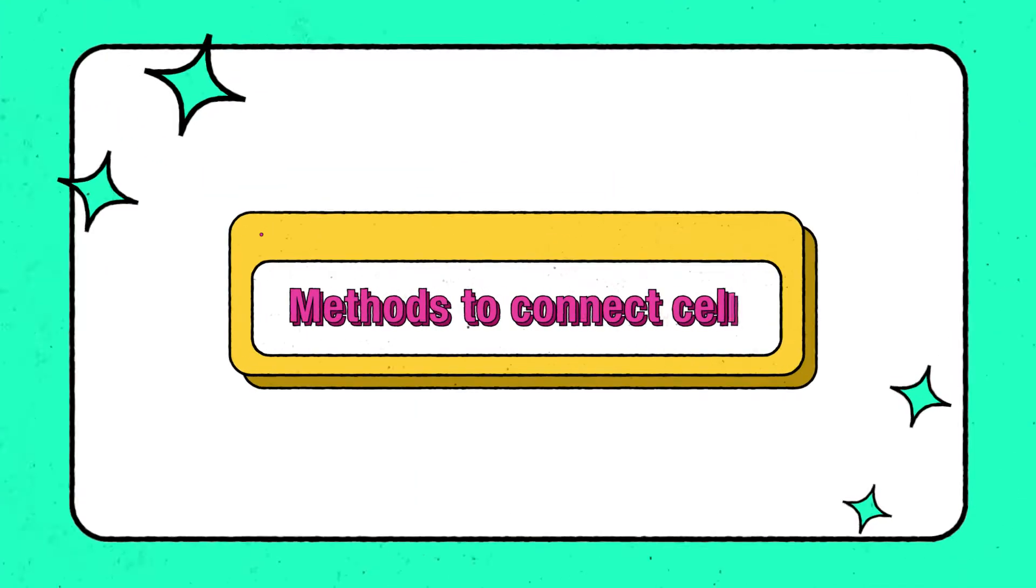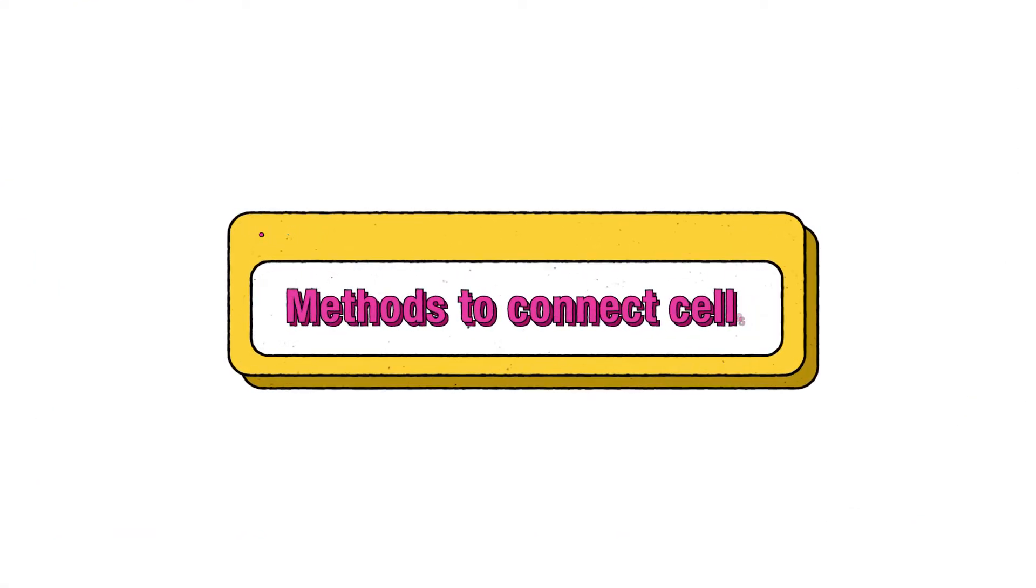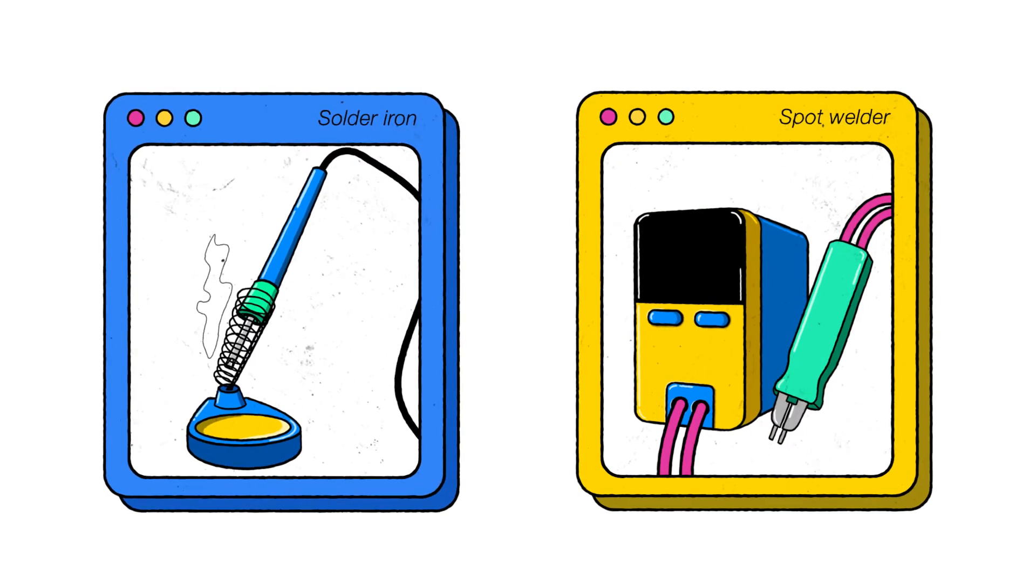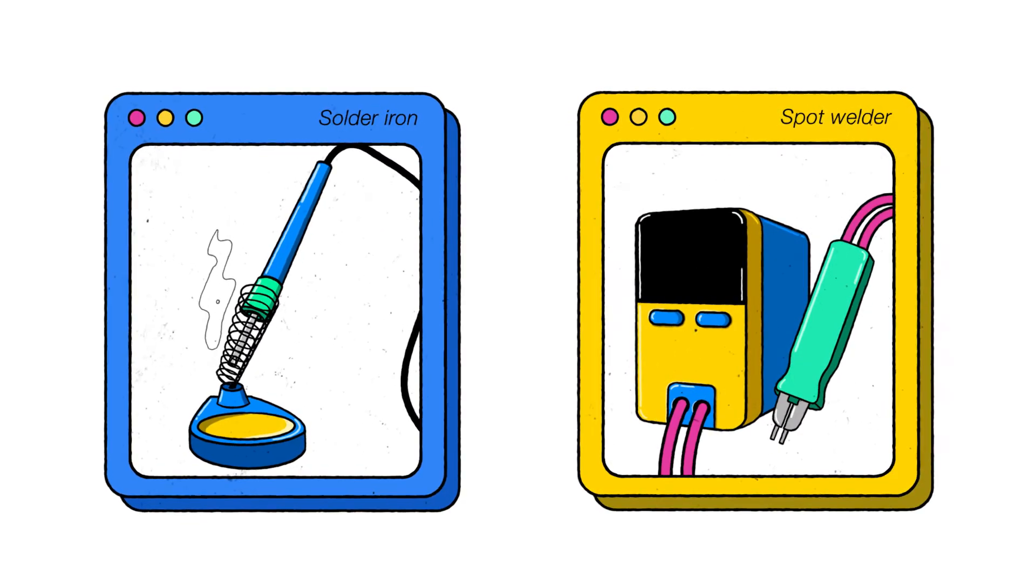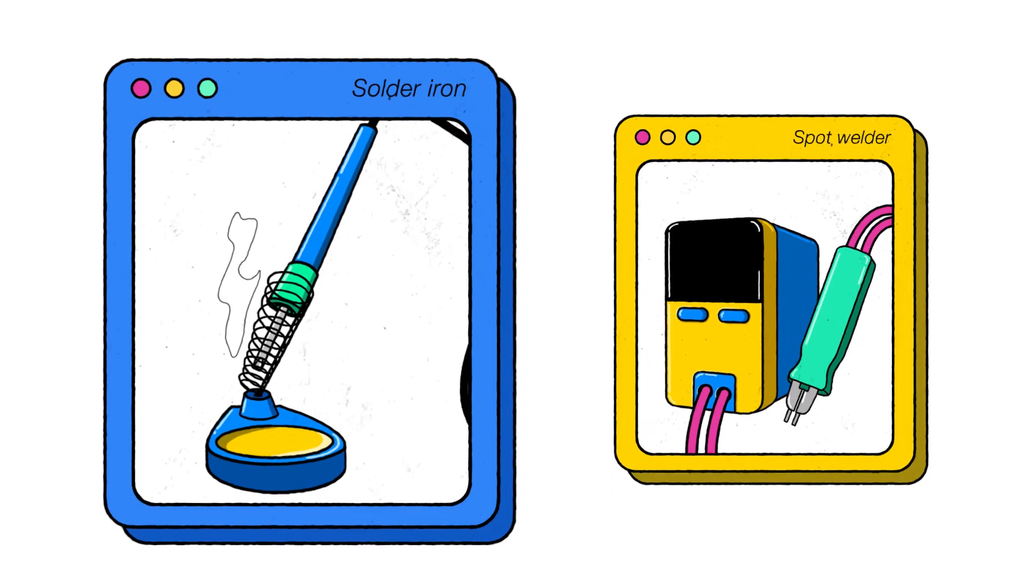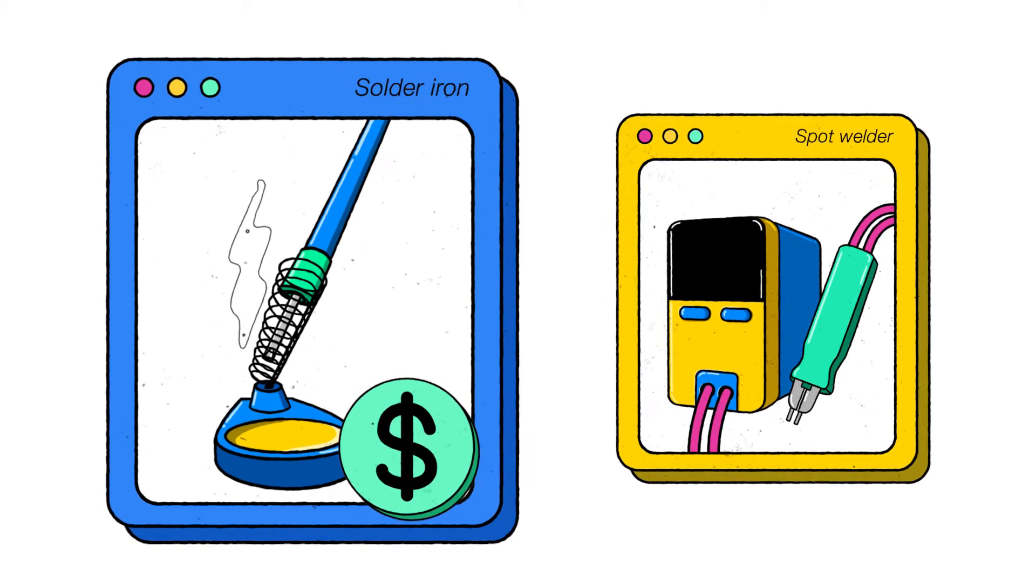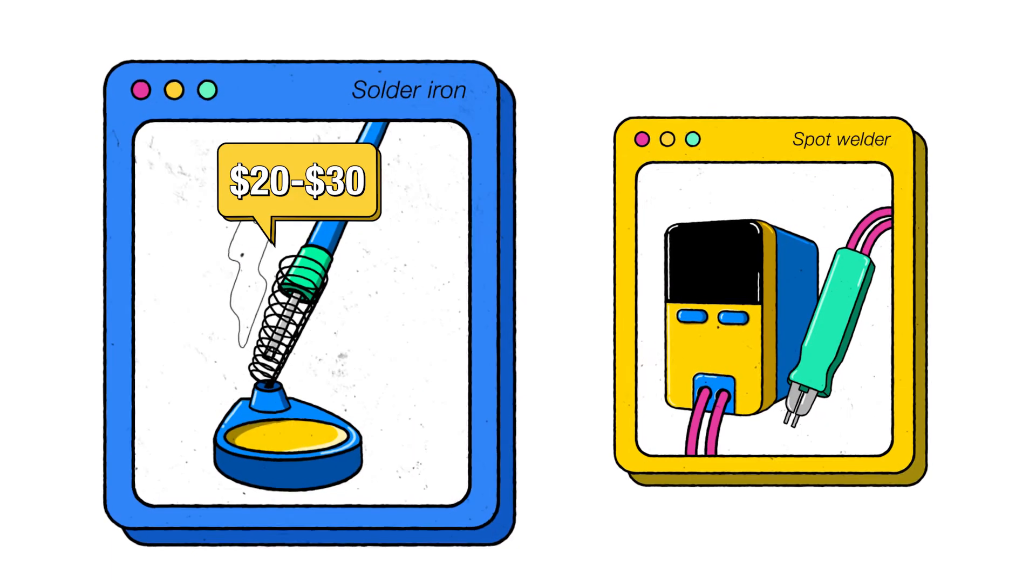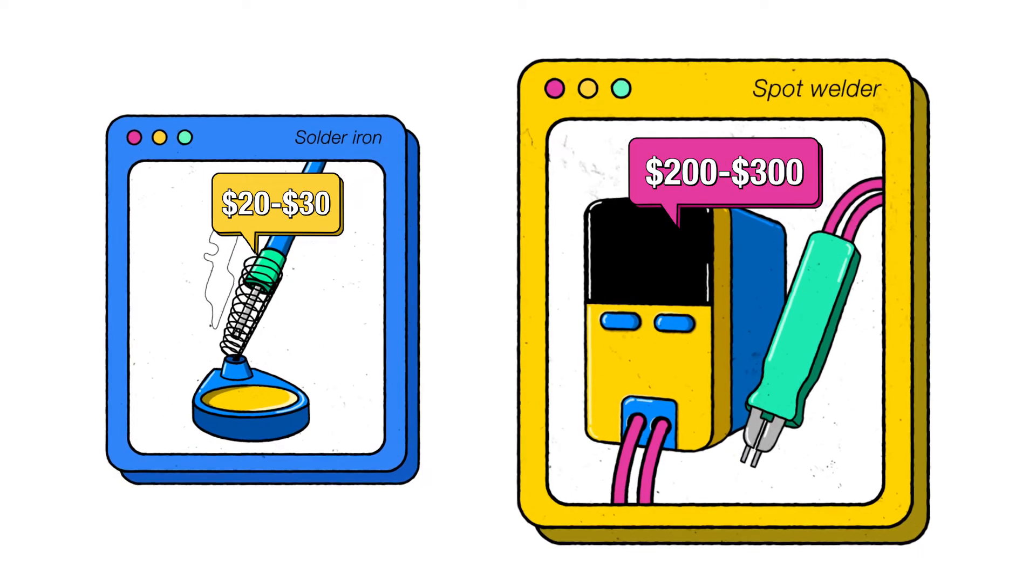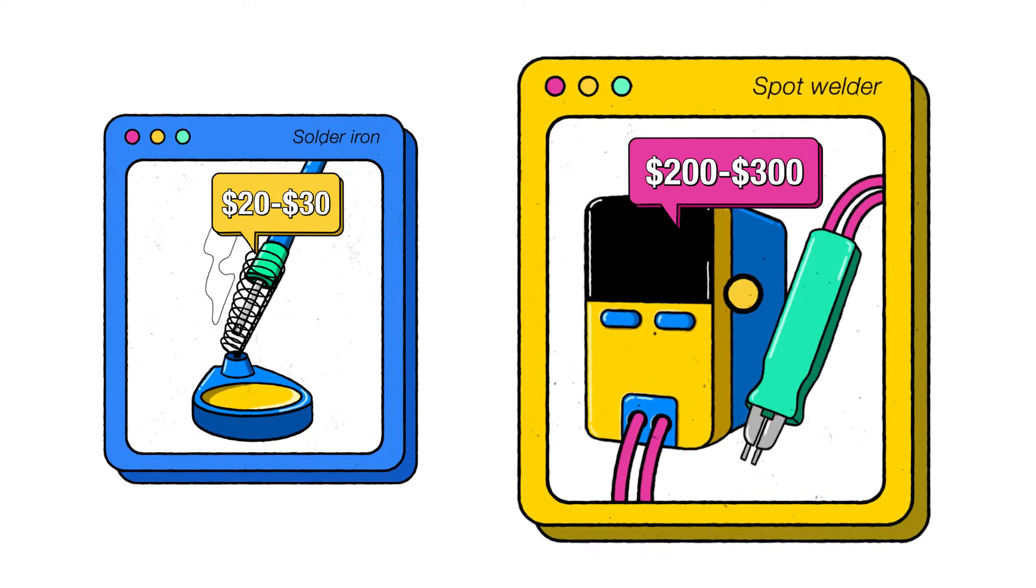Let's talk about the methods for connecting the cells together. There are two common ones that DIY enthusiasts commonly use, which are soldering and spot welding. Both have pros and cons, so you'll need to decide on your own to see which one suits you more. The main benefit to soldering over spot welding is the cost. A soldering iron costs much less than a spot welder. You can get a decent soldering iron for around $20 to $30, while a spot welder typically costs anywhere from $200 to $300. It's a lot to invest in a spot welder if you're only planning to build one or two battery packs.